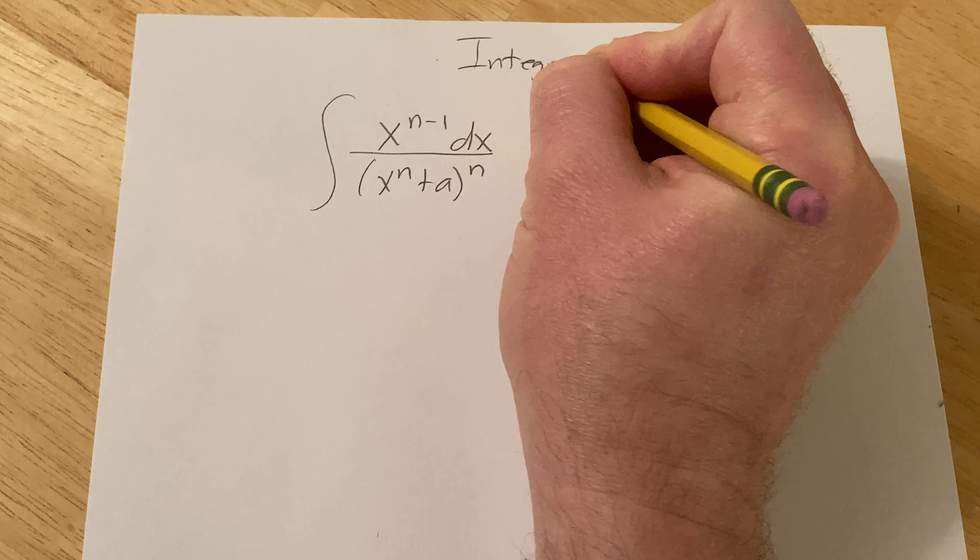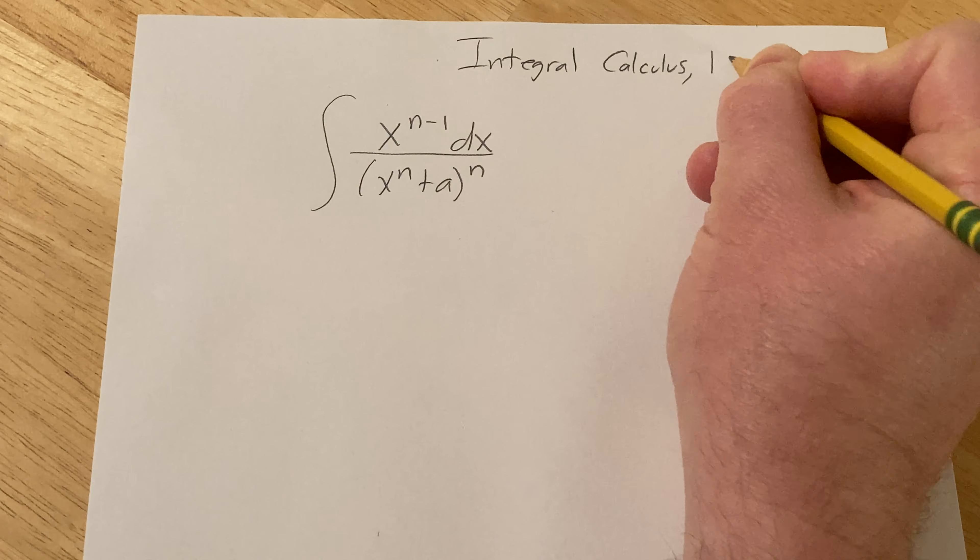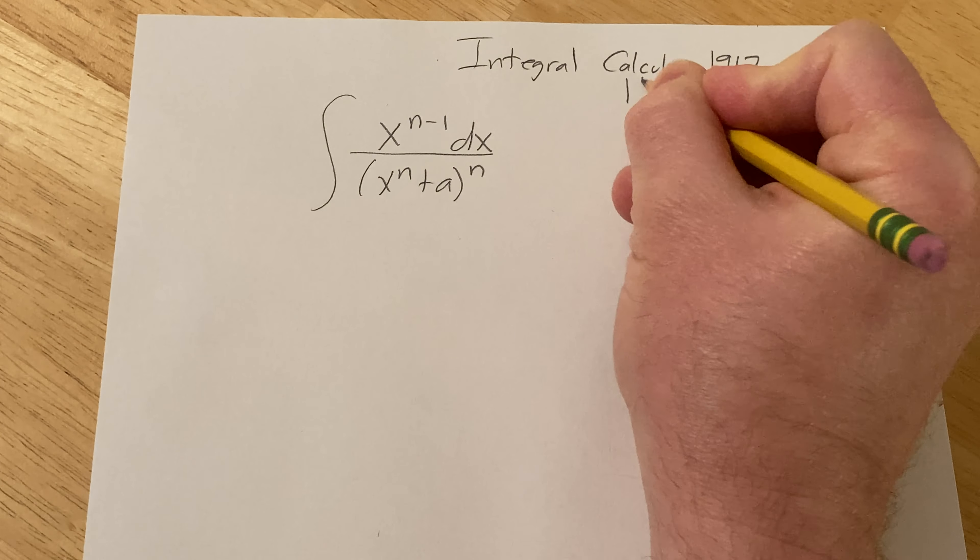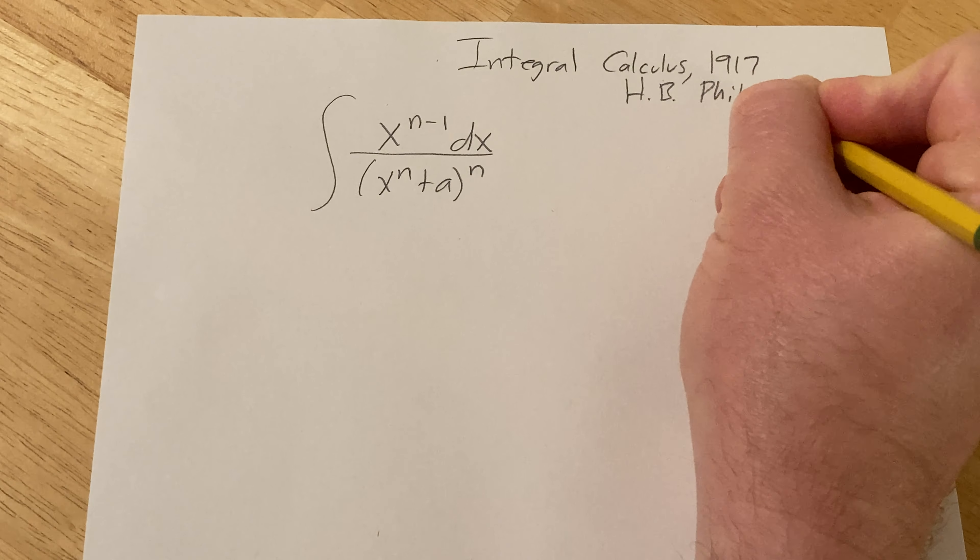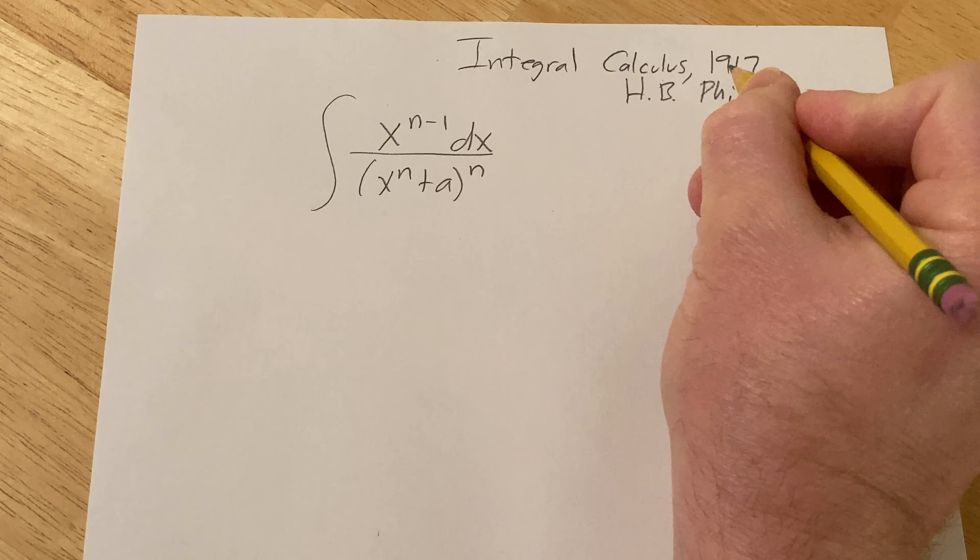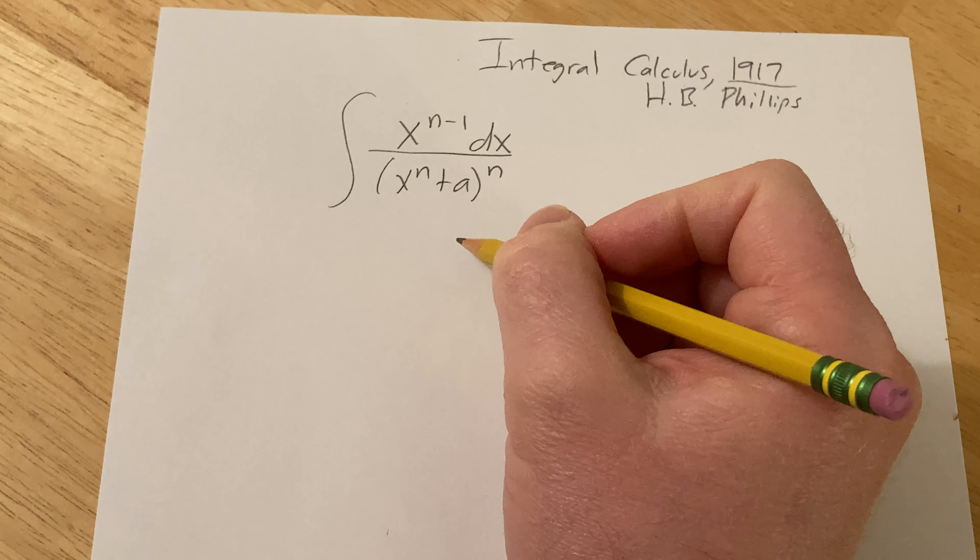It's called Integral Calculus and it was published in 1917 by a mathematician known as H.B. Phillips. He is the author of this book that was published in 1917. And this is one of the exercises in the book.